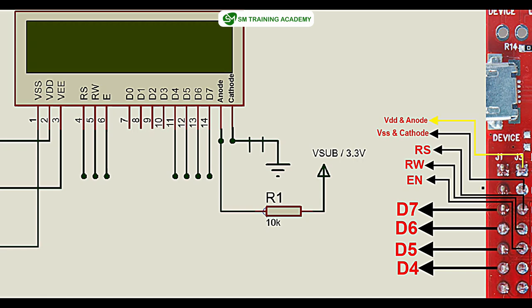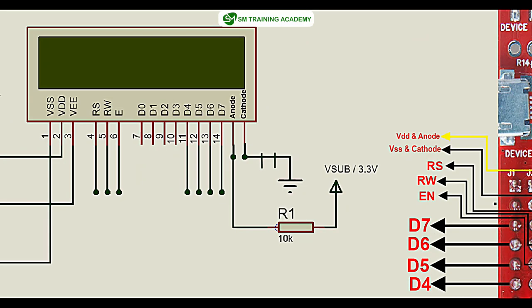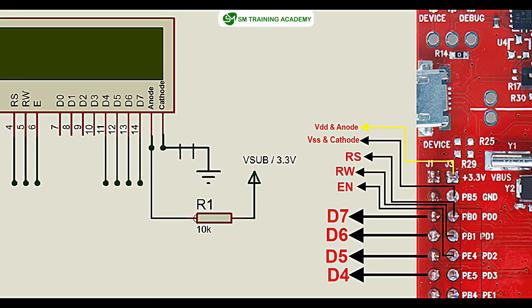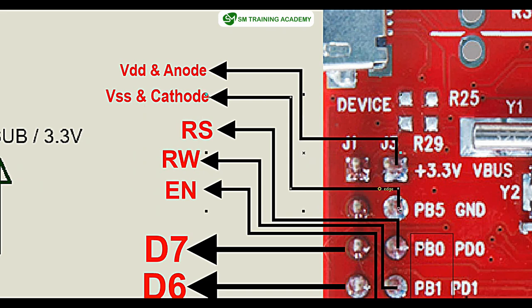If you increase the resistance value to 10 kilo-ohms, the brightness of the backlight will be lower. For increasing brightness you can decrease the resistance value. I suggest adding a 1 kilo-ohm resistor. I will connect the V-bus pin to the anode terminal through this 1 kilo-ohm resistor and also to the VDD terminal of the LCD. The VSS and cathode terminal will be connected to the ground of the development board.